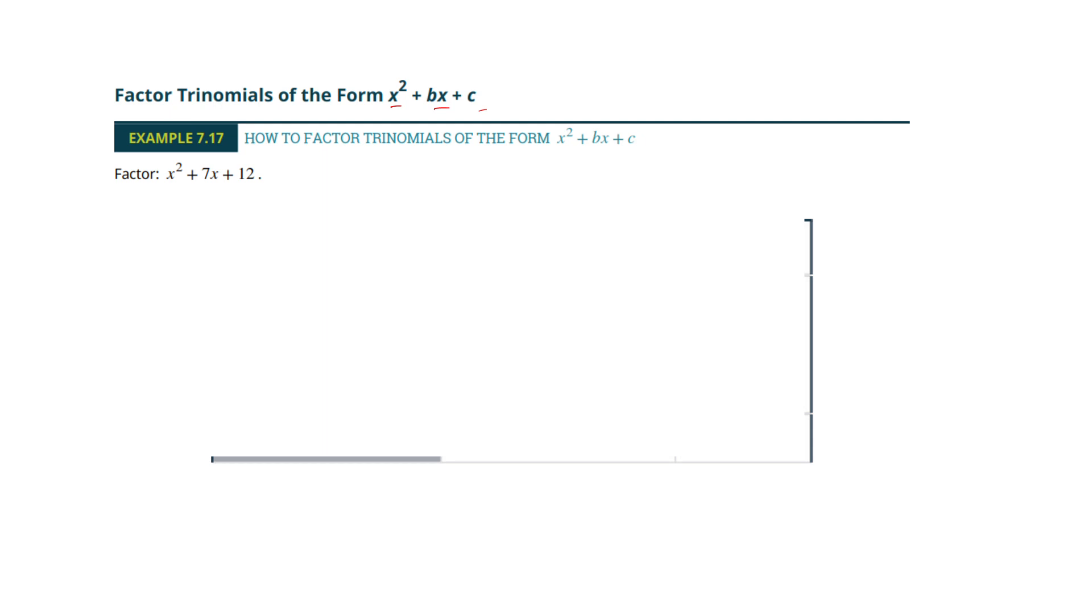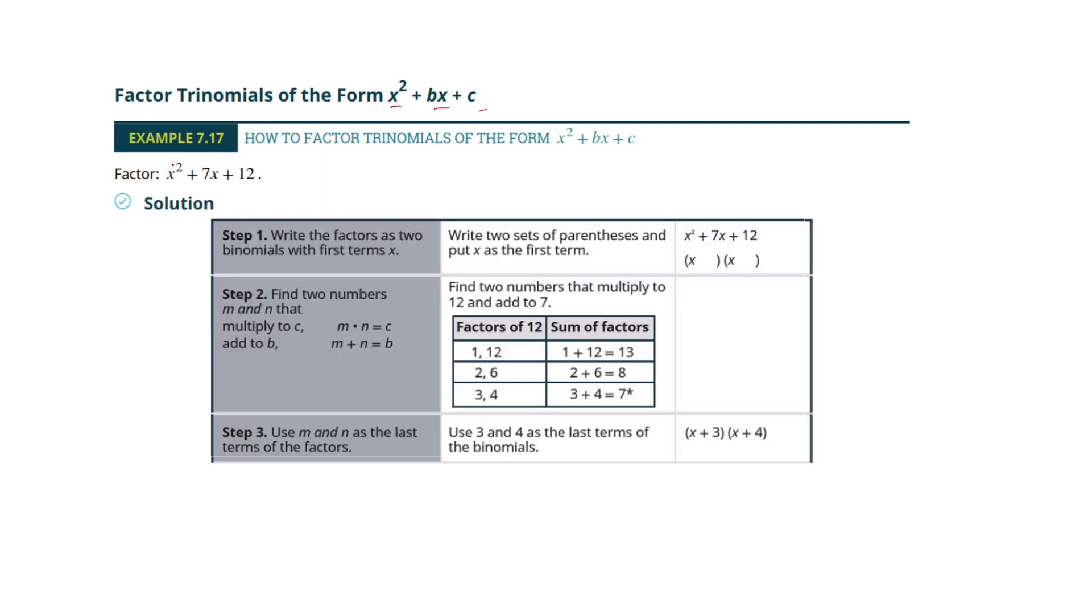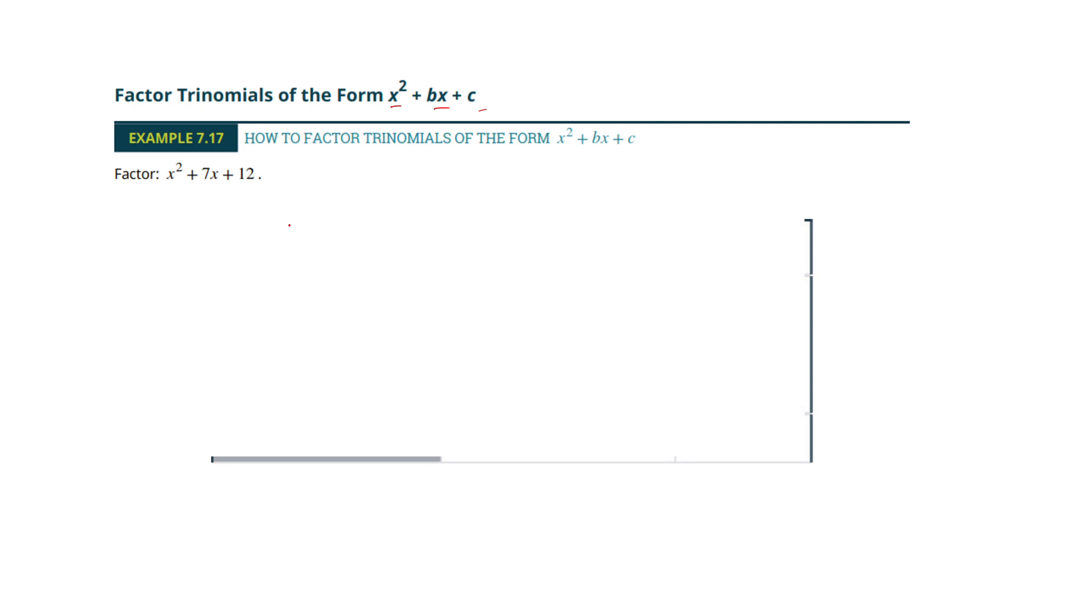What we want to do with the trinomials, we're going to play a little game. They get a little harder if there is a number in front of this x squared. But if there's not, we're just going to do a bit of a puzzle. So what we want to do here is look at this last number. I'm going to write 12 over here. Now, I'm looking for two numbers that would multiply together to get 12 and would add together to get three. Two numbers that multiply to get 12 and add to get three.